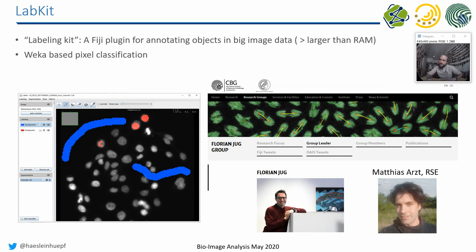There's another tool in Fiji called LabKit, developed here in Dresden in Florian Jug's lab, mainly by Matthias Arzt. It also uses WEKA in the background but is more sophisticated for processing big images. WEKA is limited to images that fit in memory — and if you think about it, from one image a Gaussian blur is calculated, then another, then edge images and so on, so many images are generated. LabKit is designed to overcome this memory limitation.